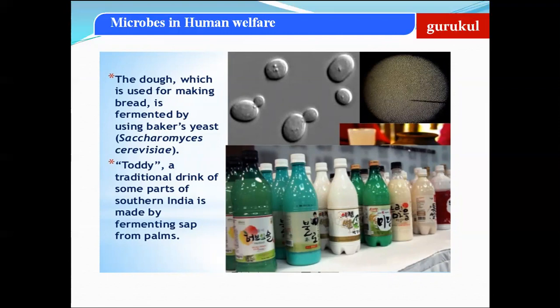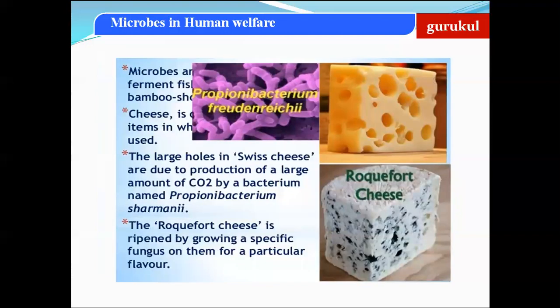Third, toddy — a traditional drink of some parts of southern India — is made by fermenting the sap from palms, such as the date palm. Microbes are also used for fermenting fish, soya bean, and bamboo shoots to make food. Cheese is one of the oldest items in which microbes are used, produced by fermentation.